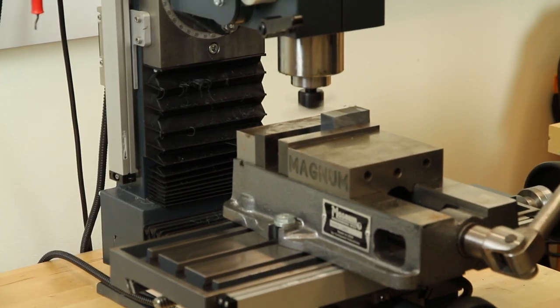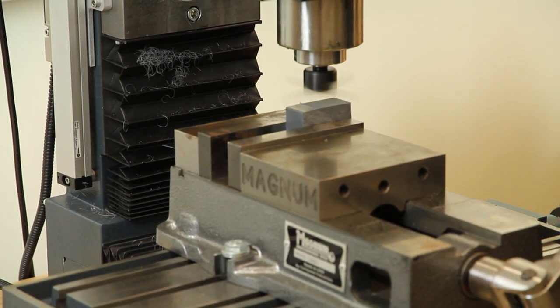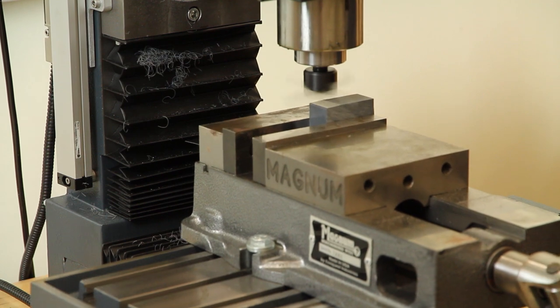This is a sped up sequence showing multiple passes with the fly cutter. Each cut is relatively small, say fifteen thousandths of an inch.